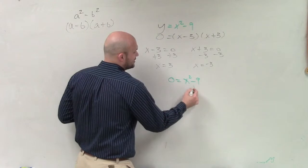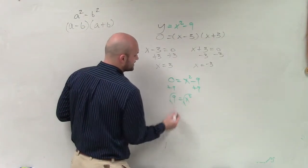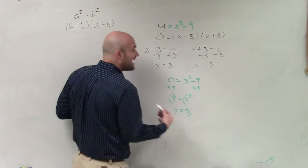x² - 9. You just add the 9. So you have 9 = x². Take the square root. And then students a lot of times just say x = 3.